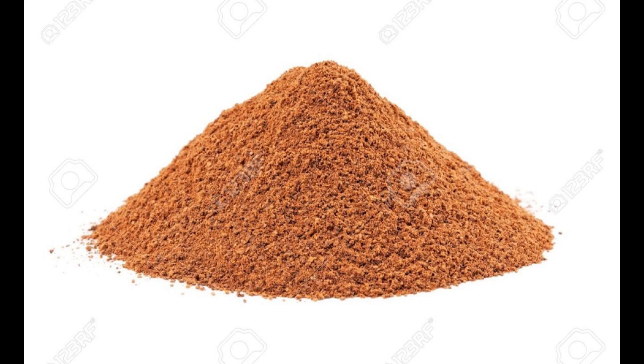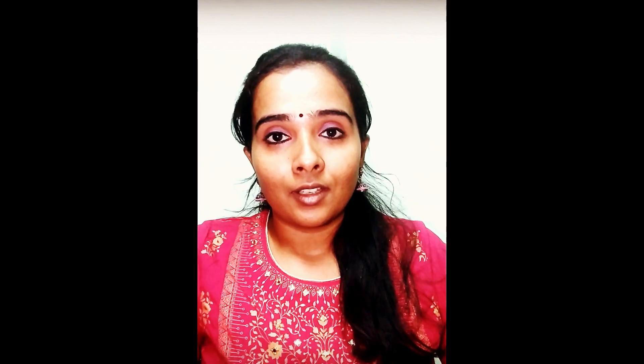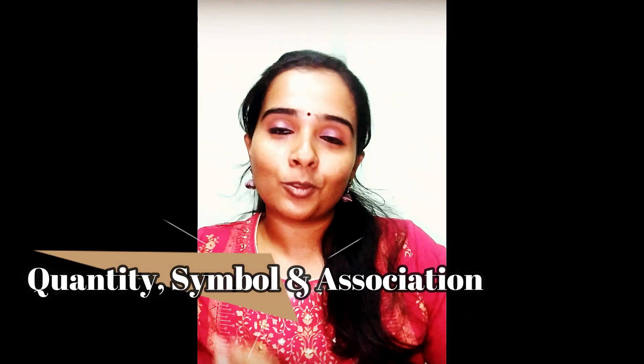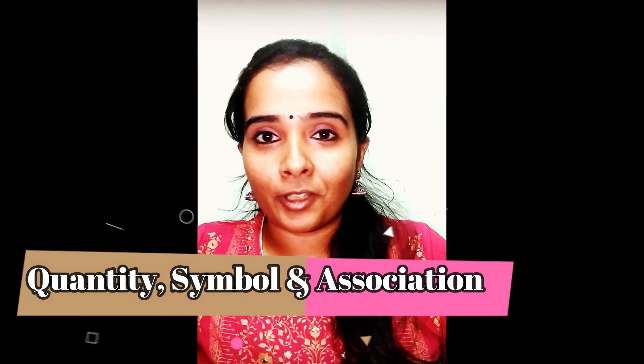For example, look at this picture — what do you see? A pile of sand. Now look at this number. You've got the picture, you've got the symbol — let's put them together and help you associate it. This is how arithmetic happens in the family environment as well: quantity, symbol, and association, across concepts and across operations.